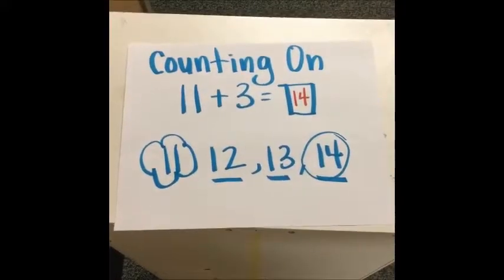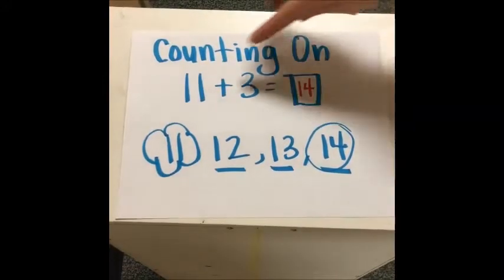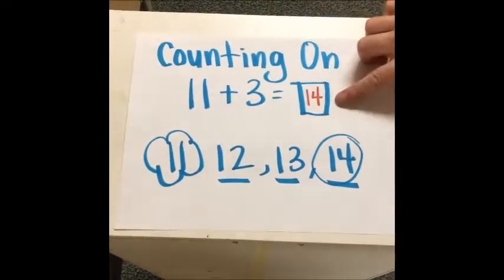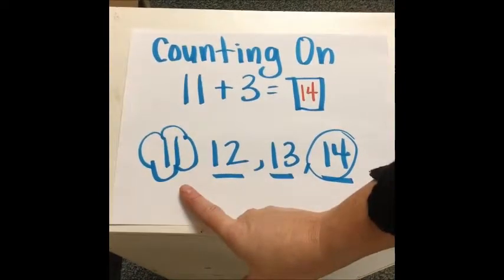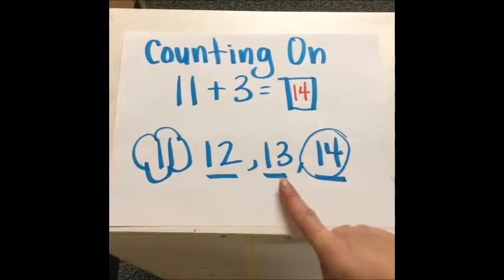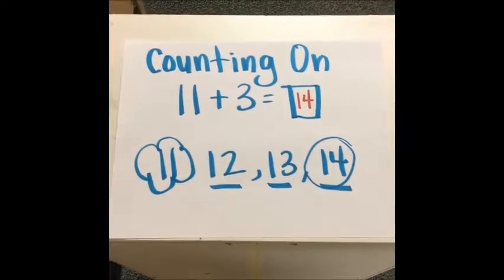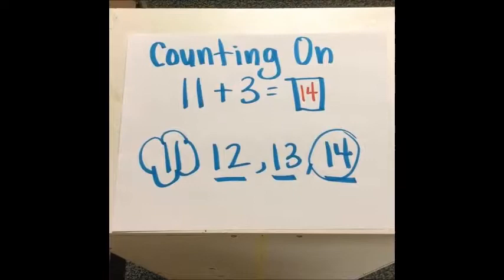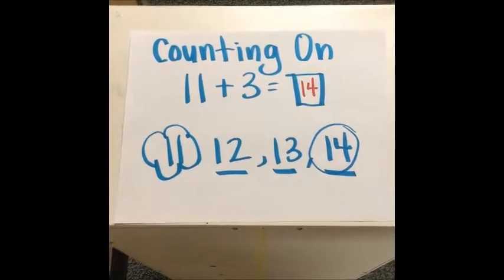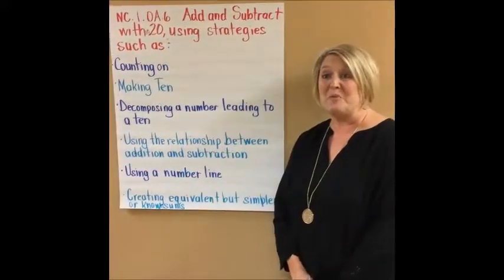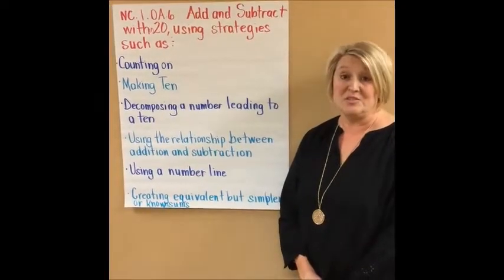When students are counting on, they'll take an addition sentence such as 11 plus 3 equals something, put 11 in their head, and then count on three numbers to get to the answer. This strategy also works with counting back. If the subtraction problem were 11 minus 3, they would start with 11 and count backwards to get to their answer.